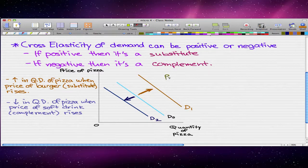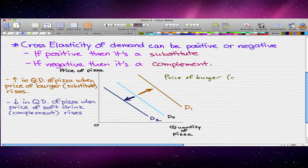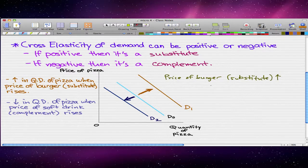And I guess we could put a little note here that the price of burger, which is a substitute, rises. And in this case, it's a positive cross elasticity.